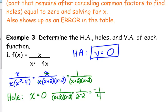Because you always, whatever you cancel out, you set it equal to zero. So we canceled the x. So we set x equal to zero. So our hole is the point zero negative one fourth. Yes, you should always write it as a point.